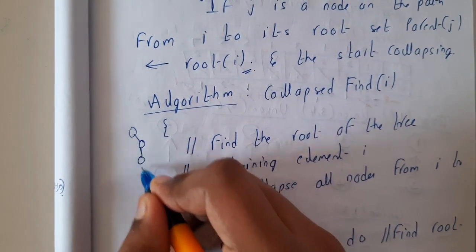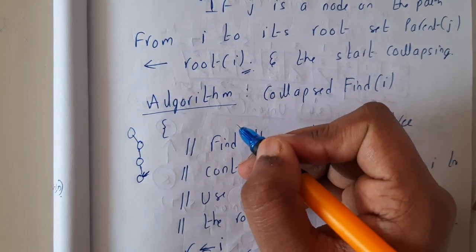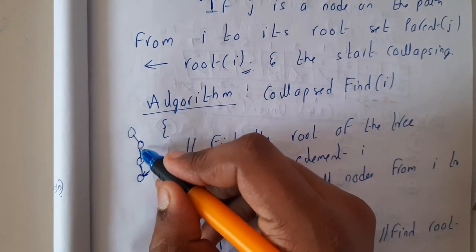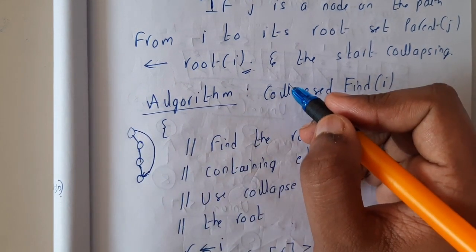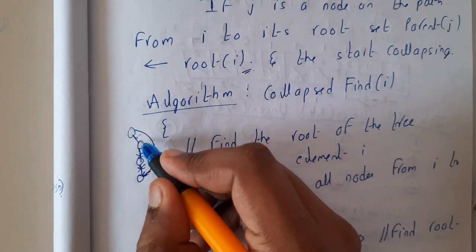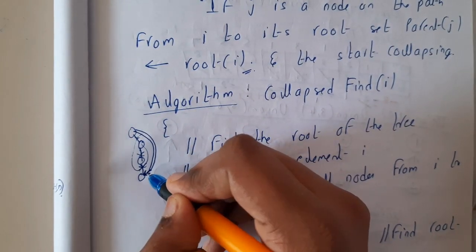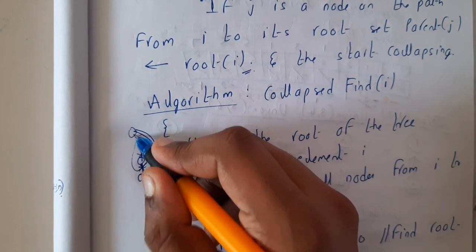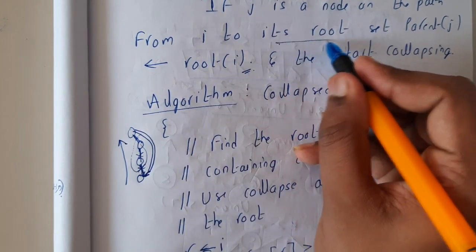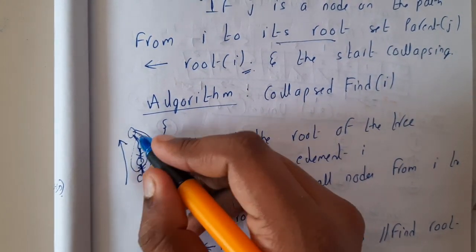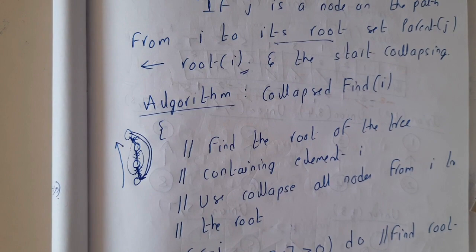Assume that you are having a path and you are asked to find an element. Instead of using the whole path, you will be constructing a shorter path by terminating intermediate connections. All these elements you will be removing, keeping only one direct path. Initially you will be moving from node to node up to the root — that is traversing to its root — and then you will start collapsing the unwanted things.